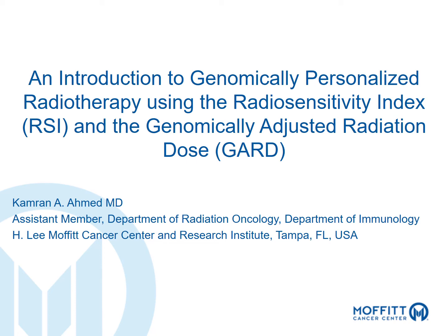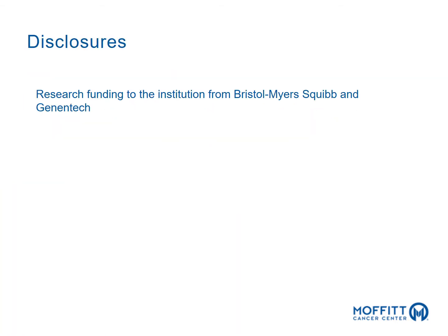Hello everyone, my name is Cameron Ahmed and I'm a radiation oncologist at Moffitt Cancer Center. Over the past several years I've had the opportunity to work with Dr. Torres Broca, Dr. Steven Eskridge, and Dr. Jacob Scott, as well as many others in our department, to develop and validate the radiosensitivity index and the genomically adjusted radiation dose for the personalization of radiation therapy dosing to different tumor types using genomics. In today's talk I'm going to give an overview of our work in this area.